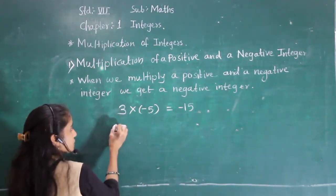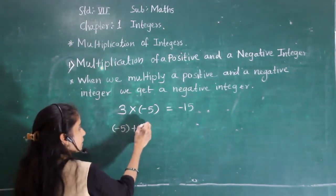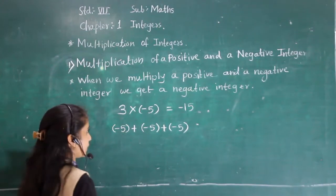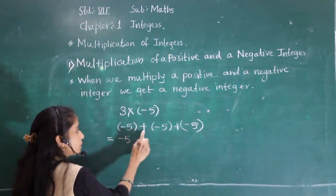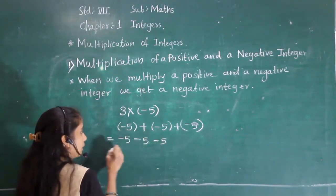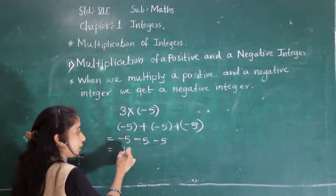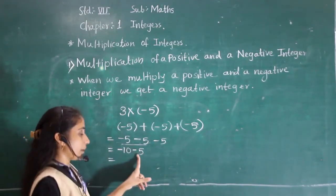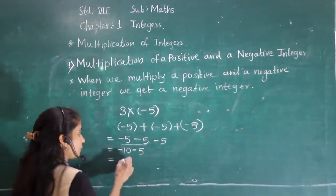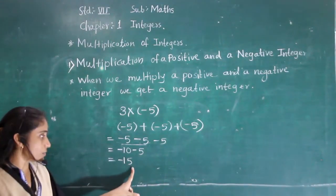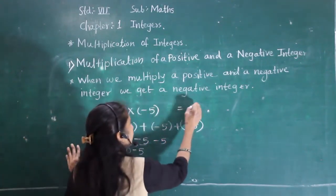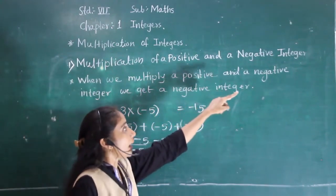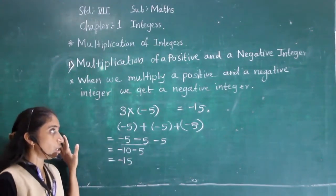We will see 3 times minus 5 in repeated addition: minus 5 plus minus 5 plus minus 5. Opening the brackets: minus 5 plus minus 5 gives minus 10, then minus 10 plus minus 5 gives minus 15. So the answer is minus 15. When we multiply a positive and a negative integer, we get a negative integer.